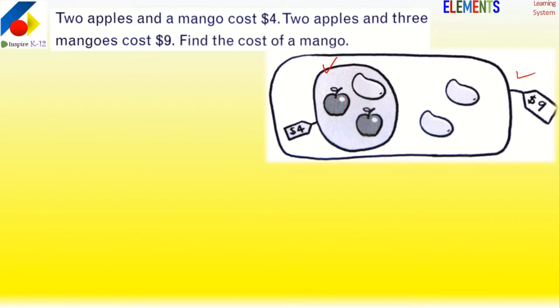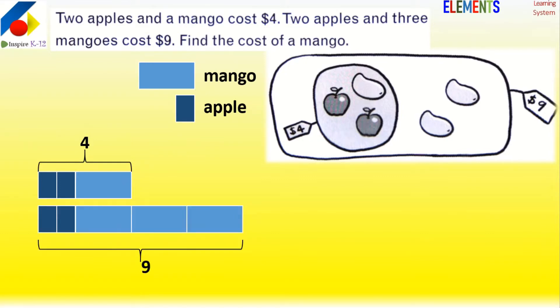So let's represent the answer. We're using mangoes in one color and apples in another color. If you have two apples and one mango, their total is 4, so we made it like this. The second statement is two apples and three mangoes, and it is 9. Now you start to understand: if this is 4 and this is 9, then how much is this? Simple: 5. If this is 5, then how much is this? Half of it. And you know everything now.